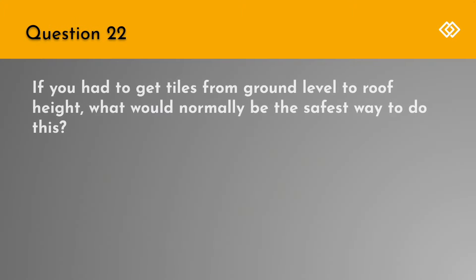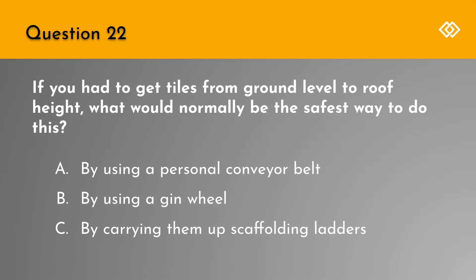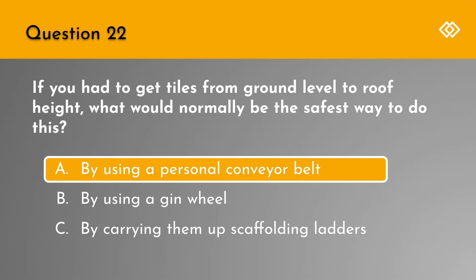Question 22. If you had to get tiles from ground level to roof height, what would normally be the safest way to do this? A. By using a personal conveyor belt. B. By using a gin wheel. Or C. By carrying them up scaffolding ladders. The correct answer is A. By using a personal conveyor belt.